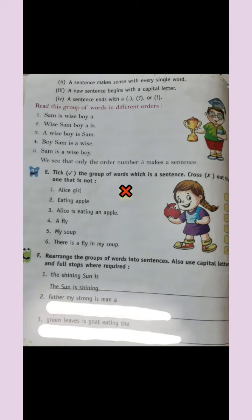In these sentences, we can see only number five makes a sentence — 'Sam is a wise boy.' All five options have the required words to make a sentence, but in options one through four, all words are not arranged in proper order. In the fifth sentence, 'Sam is a wise boy' — the words are in proper order, so this makes complete sense.